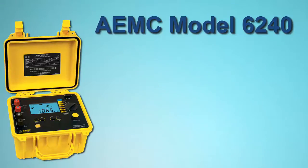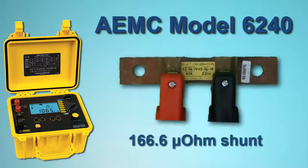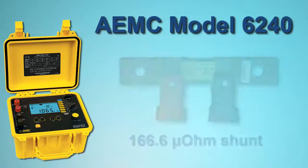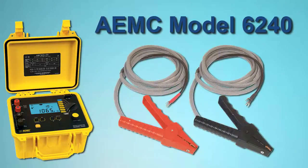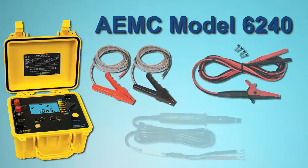For our demonstration, we will connect the instrument to a 166.6 microohm shunt and run a one-minute test with a current of 10 amps. To make the connection, we will use HIPPO type Kelvin clips. The Model 6240 also accepts alligator and spring tip probes.